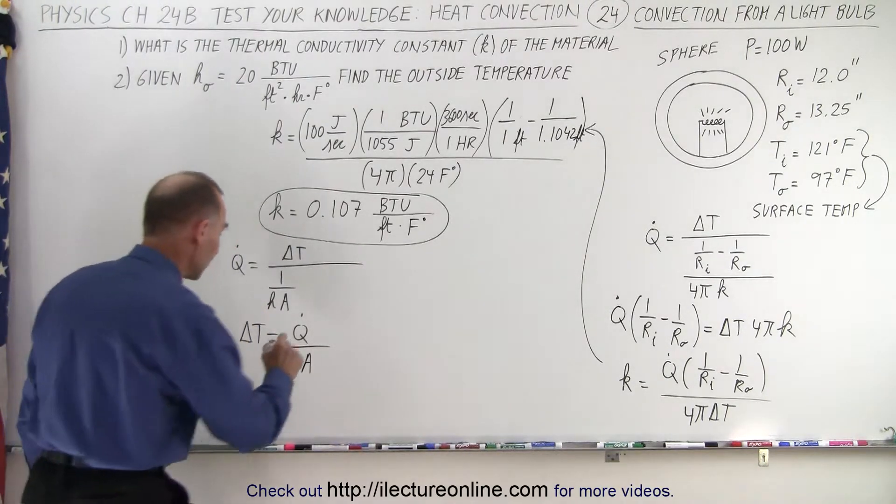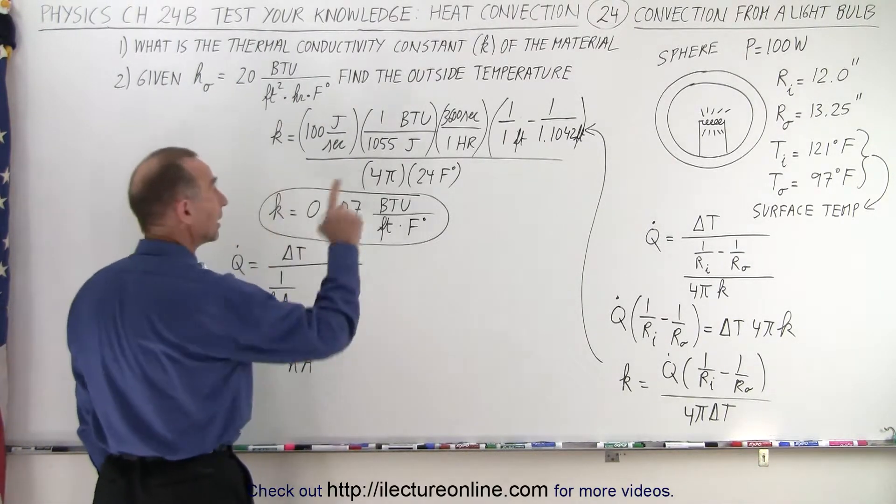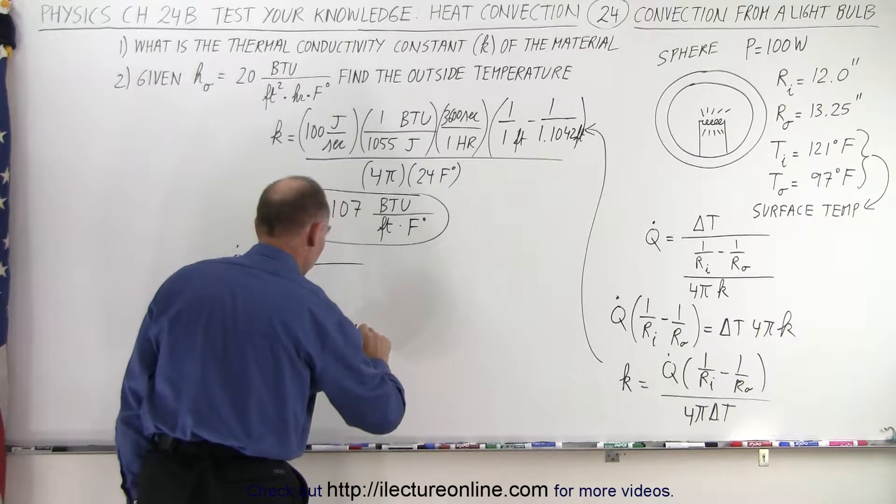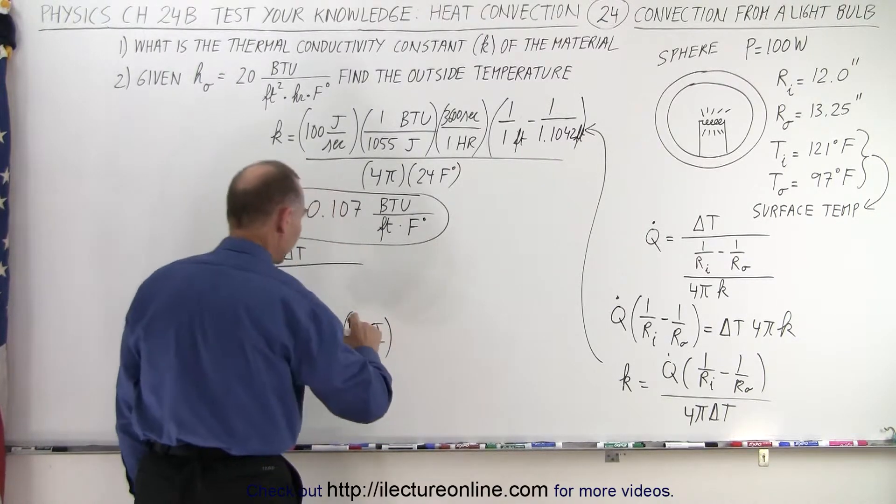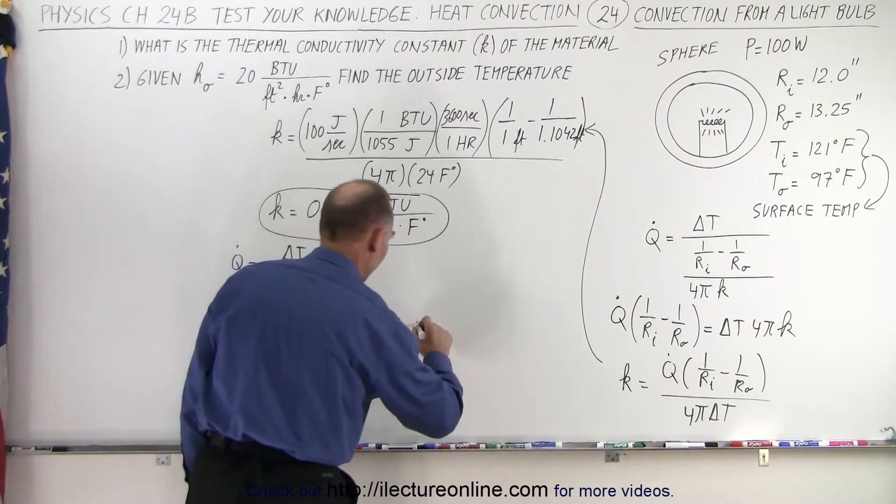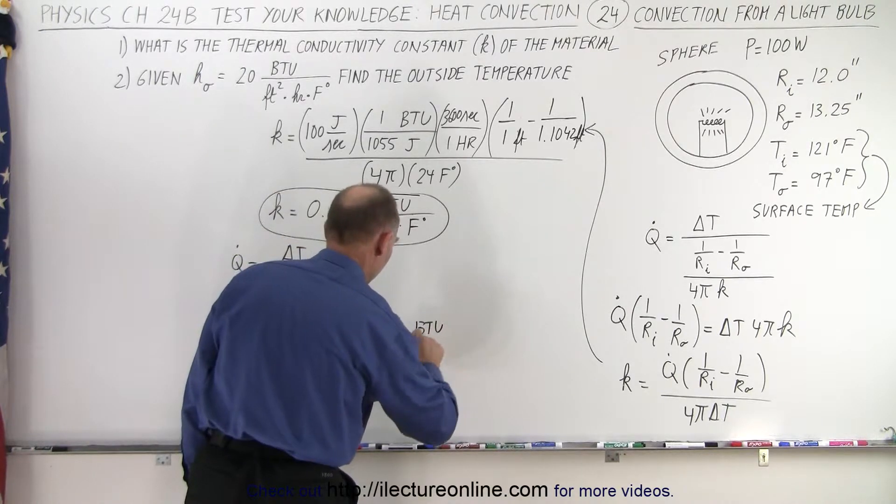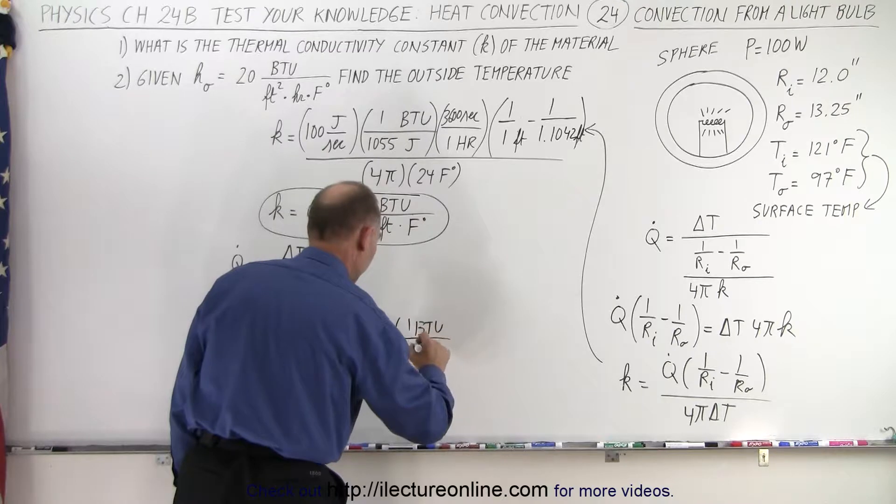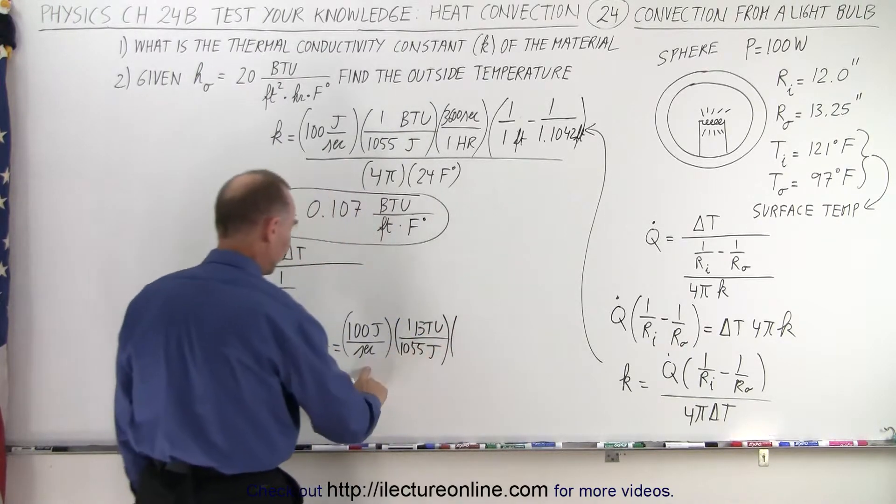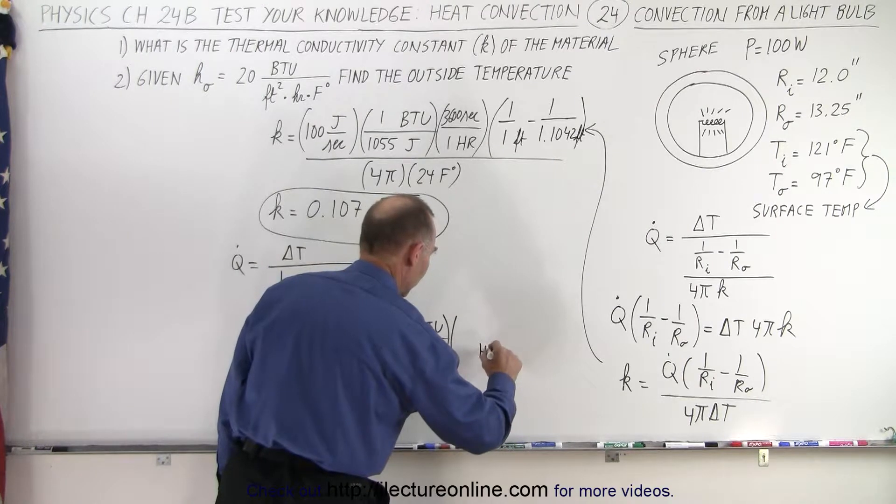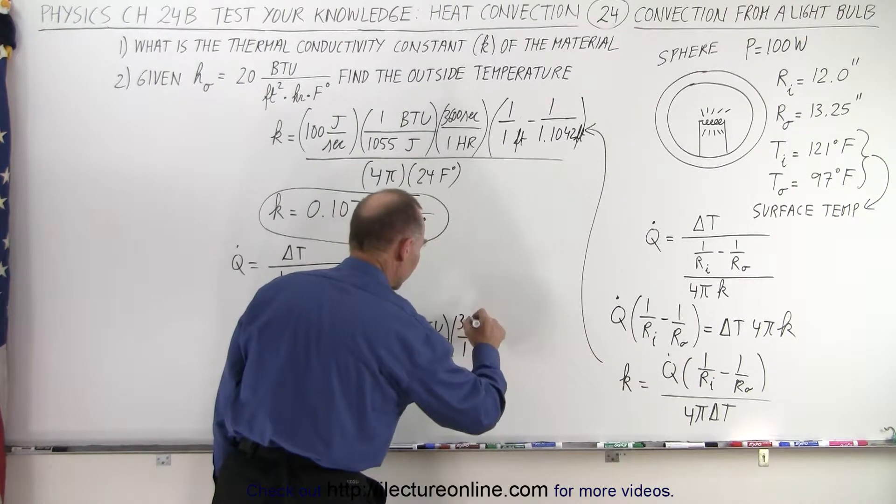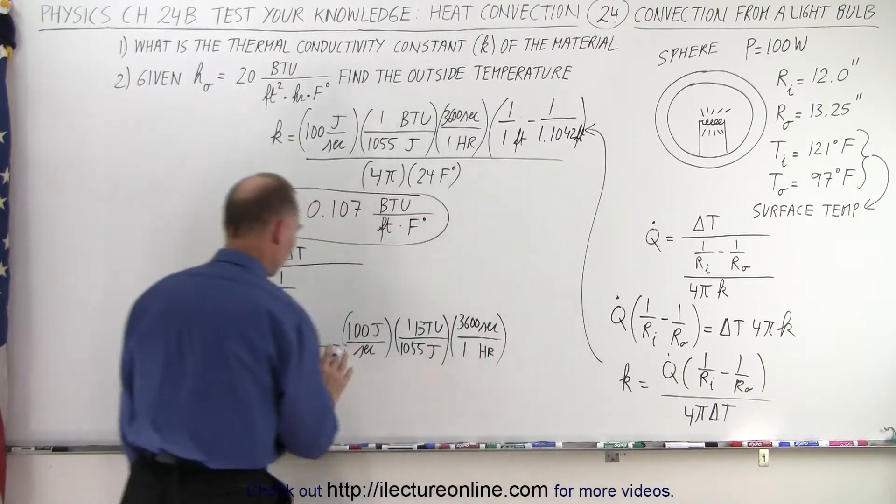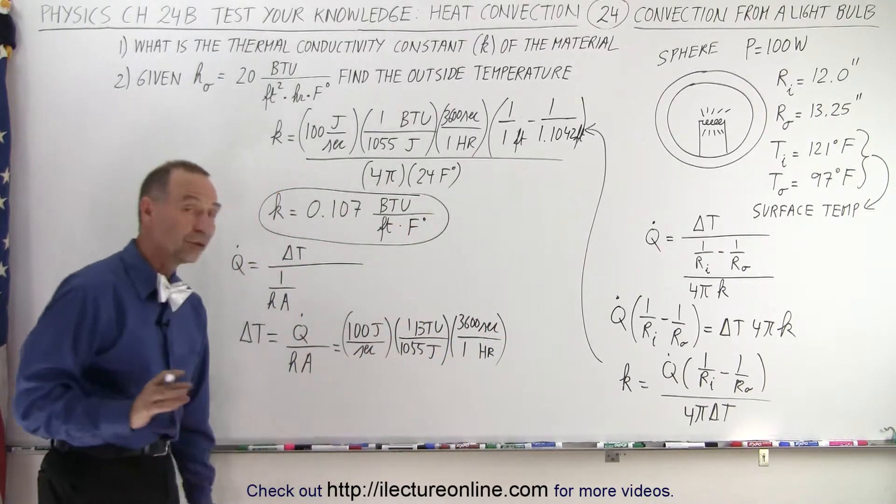All right, let's plug in what we know. Q dot, that's the amount of heat flow, that's 100 watts or 100 joules per second. We need to again convert that to BTUs, so we have BTU, and we have joules, and one BTU is 1055 joules. We have to convert from seconds to hours, so we have hours in the denominator, we have seconds in the numerator, 1 and 3600. Okay, so that converts joules per second to BTUs per hour.